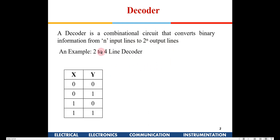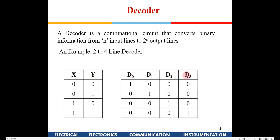For example, a 2-to-4 line decoder has two input lines, X and Y. With two lines there are four different possible input combinations. The outputs are four lines: D0, D1, D2, and D3. When the input combination is 00, the D0 line will be high and the rest will be zero. For 01, D1 goes high and the other three lines will have zero logic state.